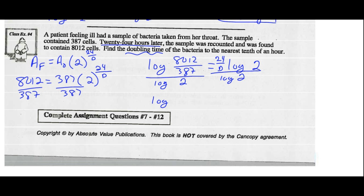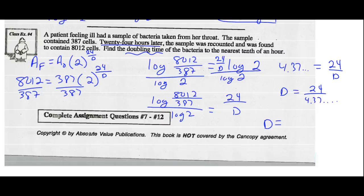Log of 8,012 over 387 divided by the common log of 2 will equal 24 over d. I would prefer to work that value out. We should get about 4.37 and so on equals 24 over d. So keep that number in your calculator. To solve for d, I multiply both sides by d and then divide both sides by 4.37. I've got that number in my calculator, I just have to go 24 divided by that answer. The doubling time should be about 5.4897. To the nearest tenth of an hour, we would say the doubling time is 5.5 hours.